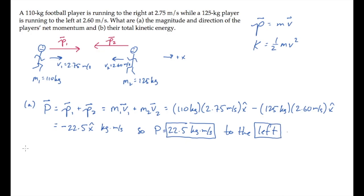Part B asks for the total kinetic energy. That's the sum of the two kinetic energies. Kinetic energy is a scalar equal to one-half mv squared, where v is the speed. So we substitute those values and calculate to find that the total kinetic energy is 838 joules.